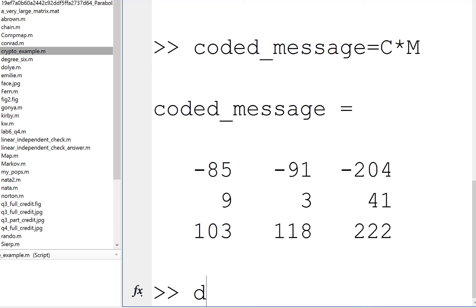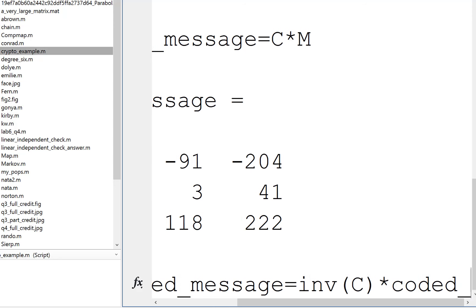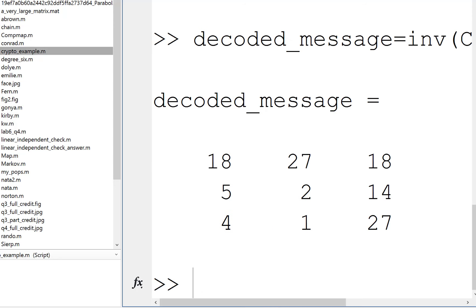And then our friend to decode the message, so let's call this the decoded message, that would be the inverse of C times this coded message. And they retrieve, again, red space barn.